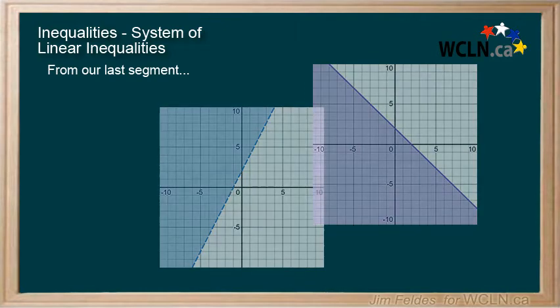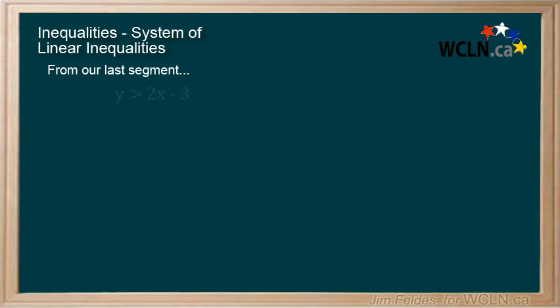For consistency and ease with graphing, we put statements in a standard slope-intercept form, like this example: y is greater than 2x minus 3.